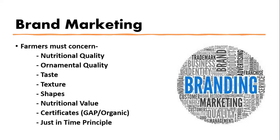Farmers must also consider taste, texture, and shapes. The market has created standards for shapes — deformed products are not being bought, and shape is now one of the main factors of agricultural output. Farmers have to consider the shapes of their products, nutritional value, nutritional quality, and certificates such as Good Agricultural Practice or organic certification.